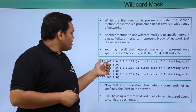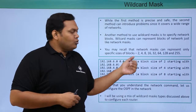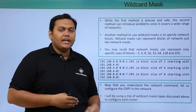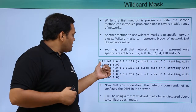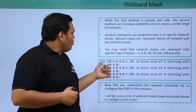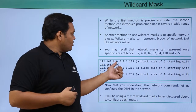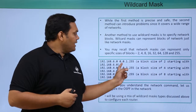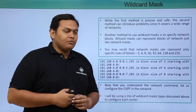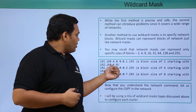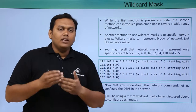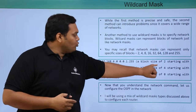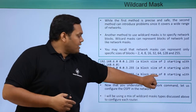The block size varies from 2, 4, 8, 16, 32, 64, 128, and 256. For example, the syntax 192.168.6.0 with wildcard mask 0.0.1.255 represents a block size of 2 starting with 192.168.6.0. This is how block sizes of 2, 4, and 8 are represented.